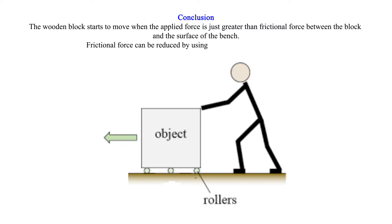Conclusion. The wooden block starts to move when the applied force is just greater than frictional force between the block and the surface of the bench. Frictional force can be reduced by using rollers, oiling, and smooth honing.